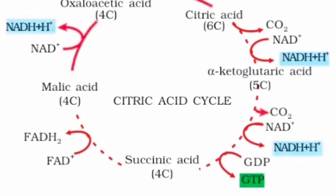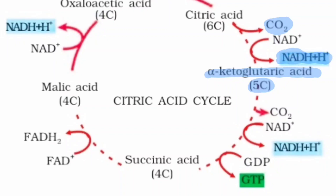The six-carbon citric acid is converted into a five-carbon molecule called alpha-ketoglutaric acid, or alpha-ketoglutarate. One carbon has been eliminated from citric acid to alpha-ketoglutarate — due to the elimination of one carbon dioxide molecule and the oxidation of citric acid, which means one NADH + H⁺ is formed again.